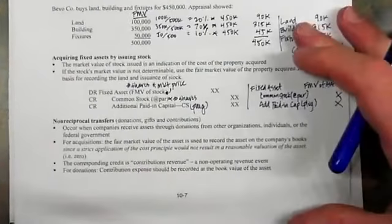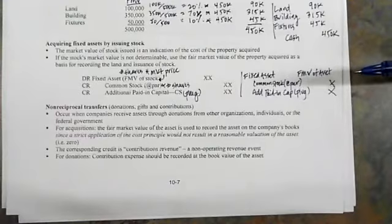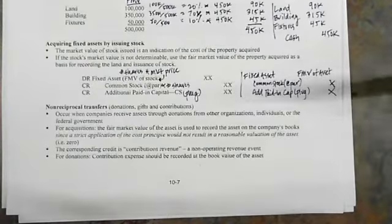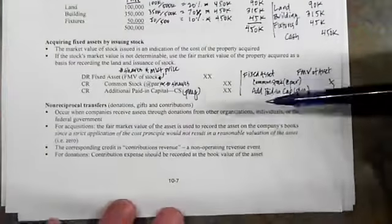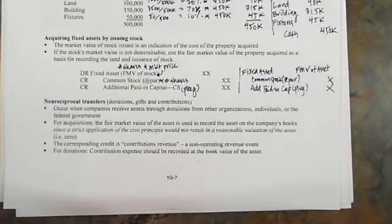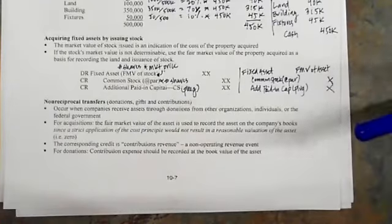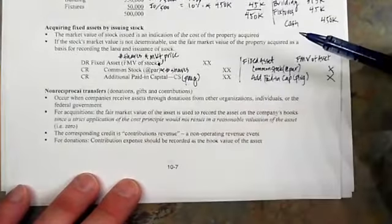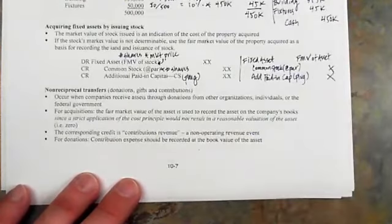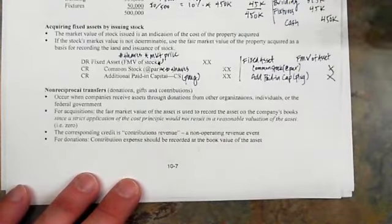Non-reciprocal transfers indicate that you don't give anything or don't receive anything in return for giving up an asset. We either have a non-reciprocal transfer into the company — a donation or contribution — or we give something, which is a disposition. For acquisitions via donation, we want to use the fair market value of the asset to record it. The corresponding credit is what we call contribution revenue — a non-operating revenue event, not going in operating revenues or operating expenses.